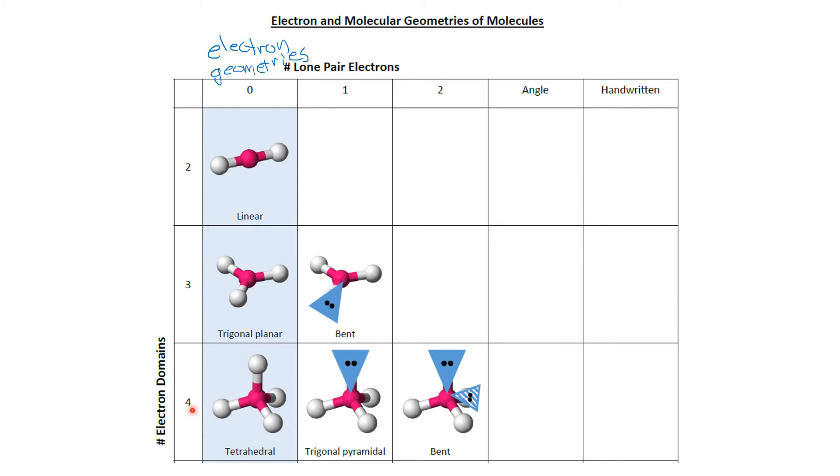For the case of four electron domains and one lone pair domain, we get a shape known as trigonal pyramidal. It's typically drawn so that you can see the three outside atoms form a triangle and then the center atom is higher than those three, forming the point of a pyramid.